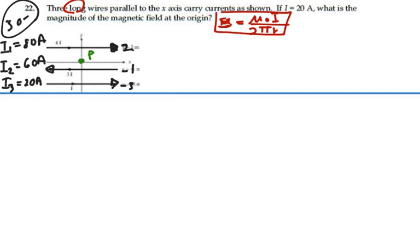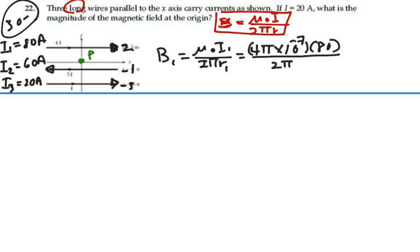So looking at wire number 1, we have magnetic field will be equal to mu naught i1 over 2pi r1. That's going to be 4pi times 10 to the minus 7, i1 is 80 amps, and our distance from point P is 2 meters, because we're looking at y equal to 2, and P is at the origin. So looking at this, the 4pi's cancel out, and we get 8 times 10 to the minus 6 tesla.